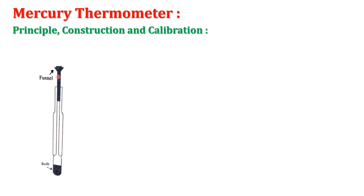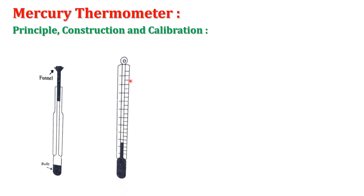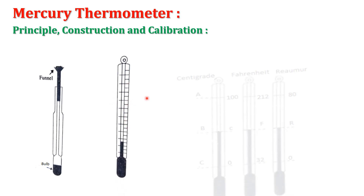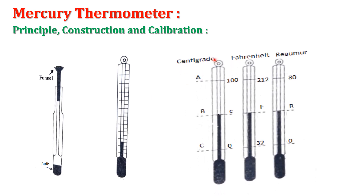The bulb is completely filled with mercury and it rises slightly. Before sealing the mercury thermometer, we confirm no air remains inside the capillary, and then the capillary tube is sealed off using a blowpipe flame and kept for a long time.